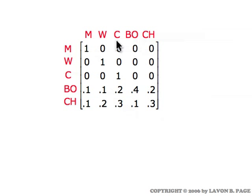Once an item is sold to a man, woman, or child, it's gone — it's out of the picture. So we treat those three states as absorbing states; we're no longer interested in the item after it's been sold. The transition probabilities for the Boston and Chicago stores are based on what happens to items in a week's time. In the Boston store, 10% of the stock is sold to men, 10% to women, 20% to children, 40% remains in the Boston store unsold, and 20% of items are shipped to the Chicago store.